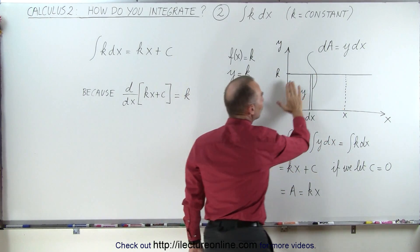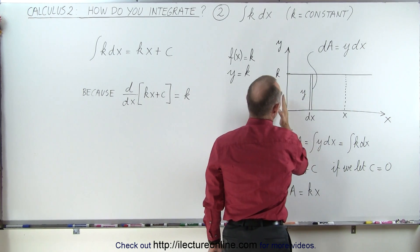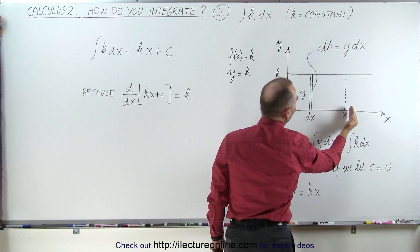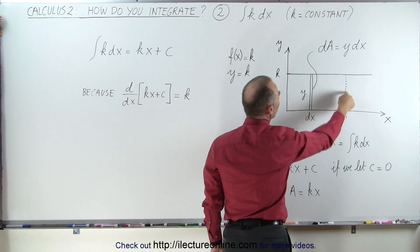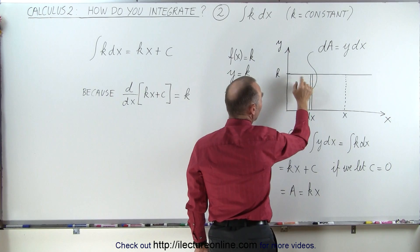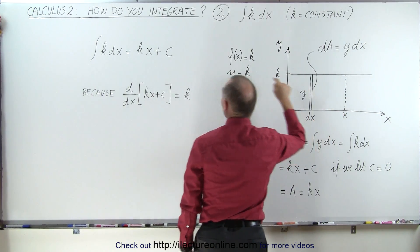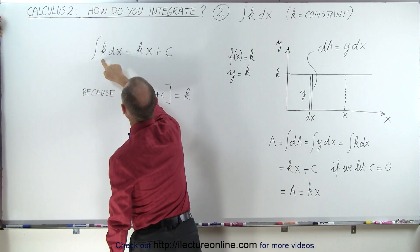Now, imagine a region that's underneath that function right here, underneath that line, out from x equals 0 to x equals x. What is this area equal to? Well, it turns out that the area here, that's bounded by this rectangle here, is equal to the integral of that constant k times dx.